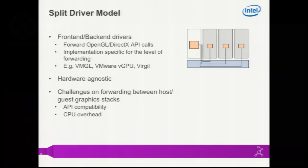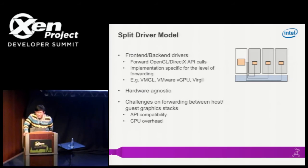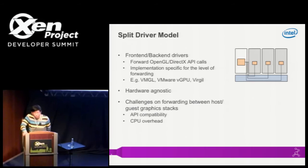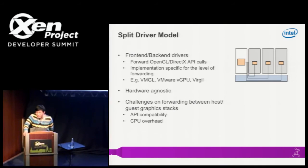Next is the split driver model. There is a frontend and a backend that talk to each other. Basically, you can forward the API — like OpenGL or DirectX — from the guest to the host for processing. It achieves pretty good performance and there are multiple existing solutions available. It is hardware agnostic, but also quite complex. For example, you need to support many API versions, and handling a guest using DirectX while the host uses OpenGL is still a hard problem.